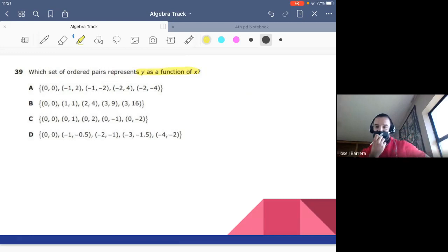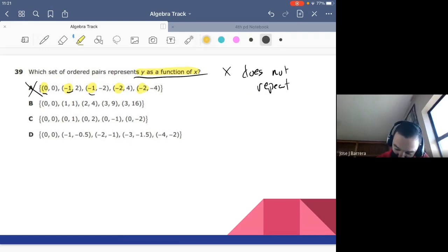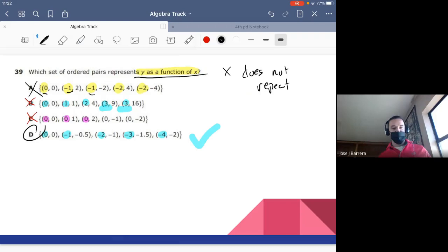Whenever we're talking which set of ordered pairs represents Y as a function of X, what they're referring to is which one does our X not repeat. So you're literally going to look at just the first numbers because for it to be a function, X does not repeat. So X does not repeat. I see negative 1, negative 1. X repeats. Let's go to the second one. 0, 1, 2, 3, 3. I see 3 and 3. Wrong. 0, 0, 0, 0. It keeps repeating. Let's go to the last one. 0, negative 1, negative 2, negative 3, negative 4. Function. X cannot repeat. That's all you're looking for on those data points.